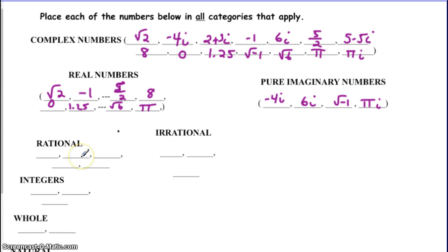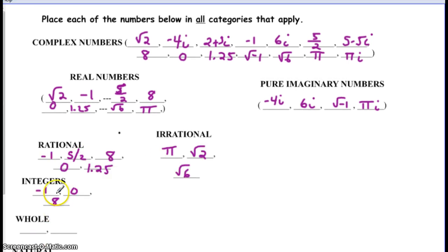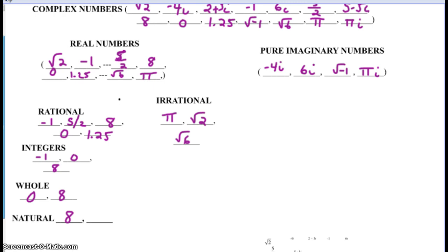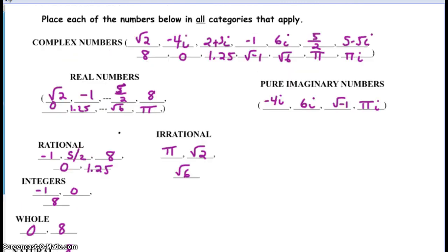All the others would be rational. For integers — remember no fractions or decimals — there are only three: negative 1, 0, and 8. For whole numbers it would be 0 and 8, since it's positive integers plus zero. For natural counting numbers, you only have 8. The only natural number in the entire list is 8. If you have questions, write them in your notes so I can see them when checking.